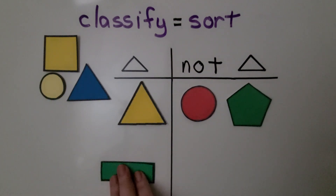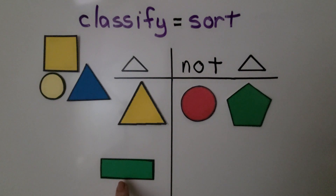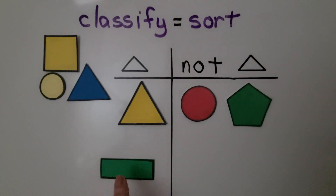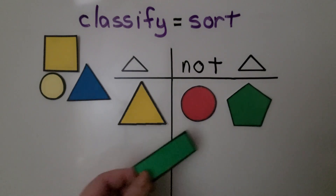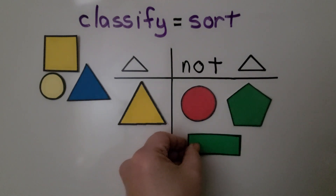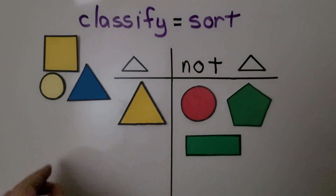Is this a triangle? It has one, two, three, four sides and four square corners. That's too many sides and too many corners. That's a rectangle, not a triangle.